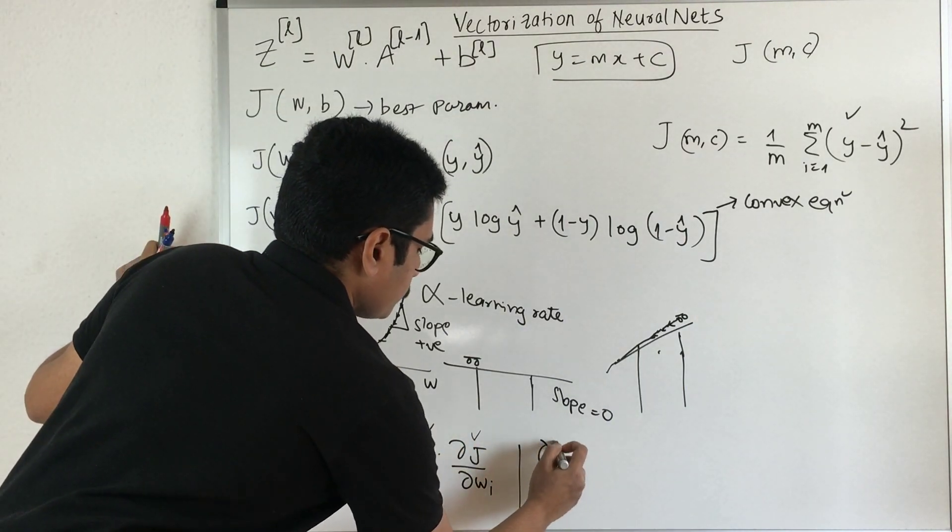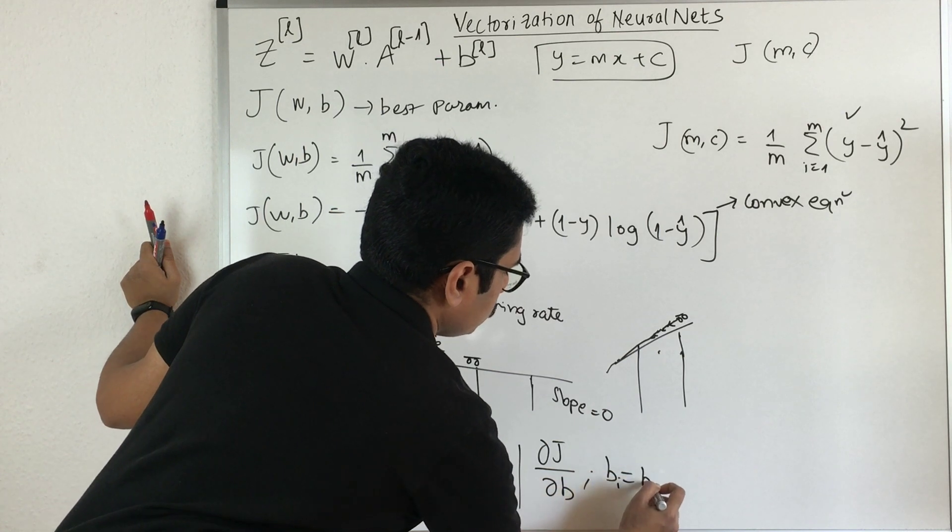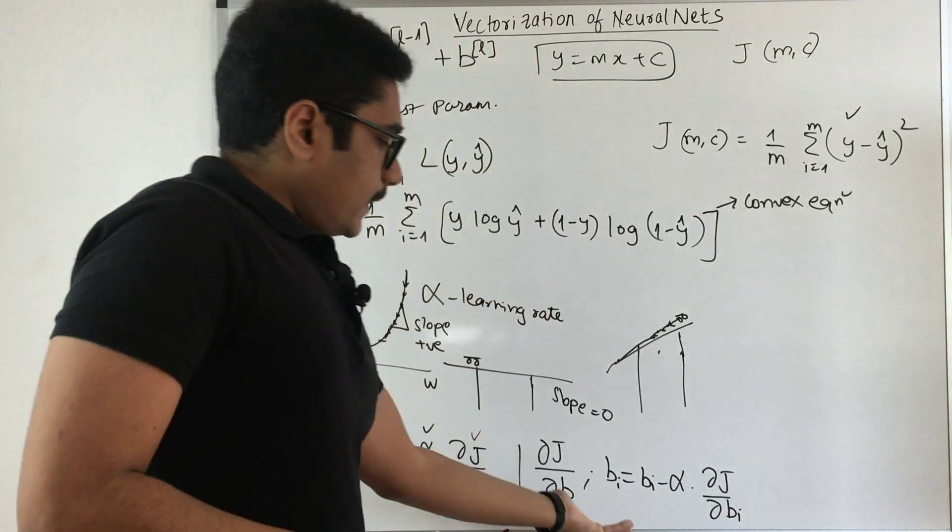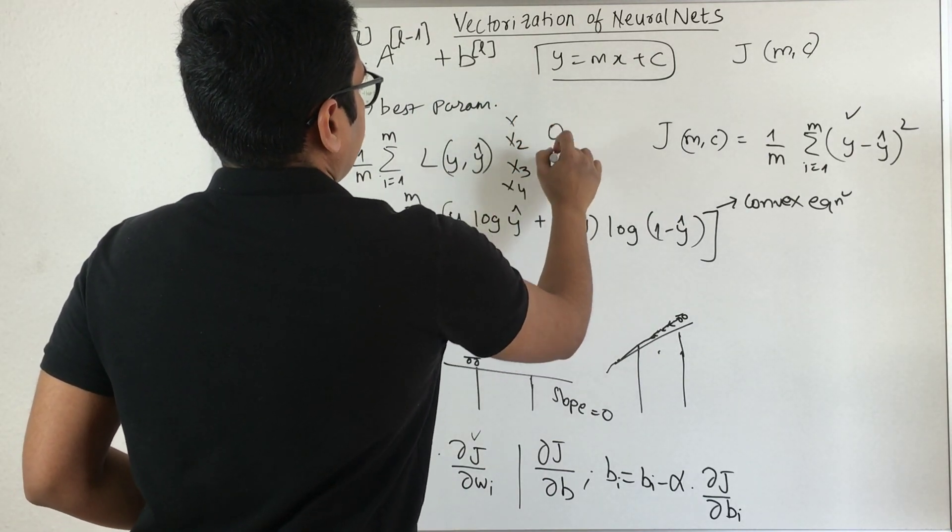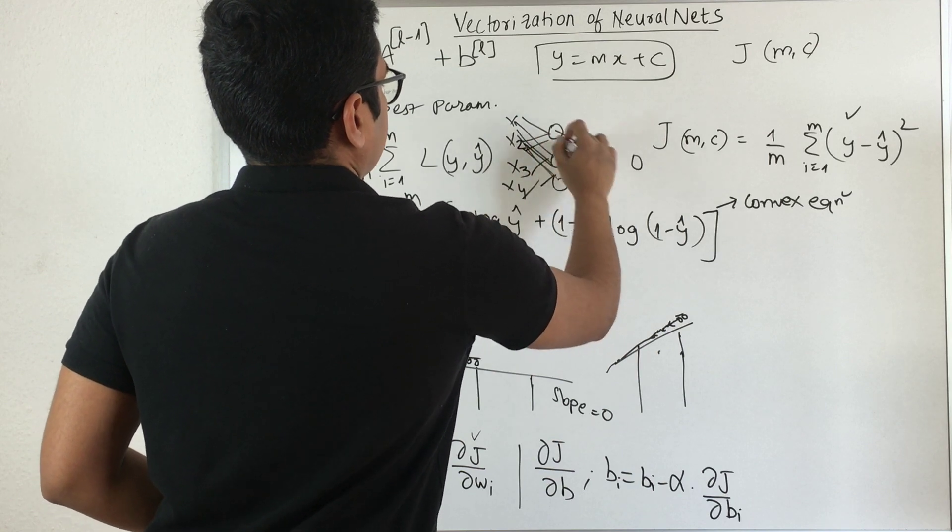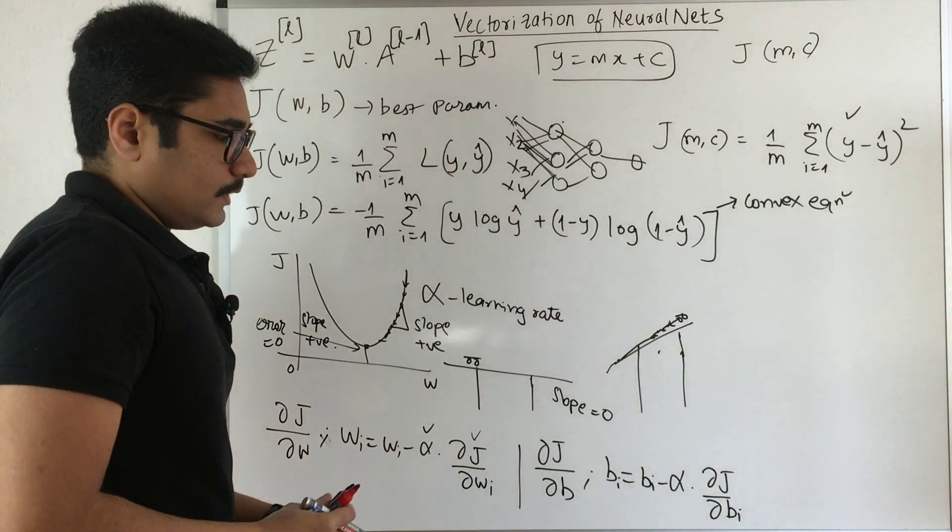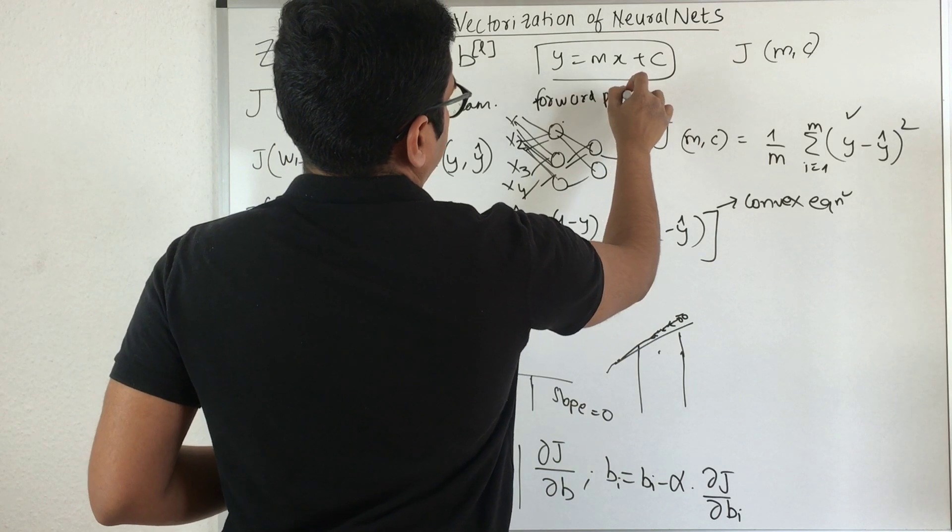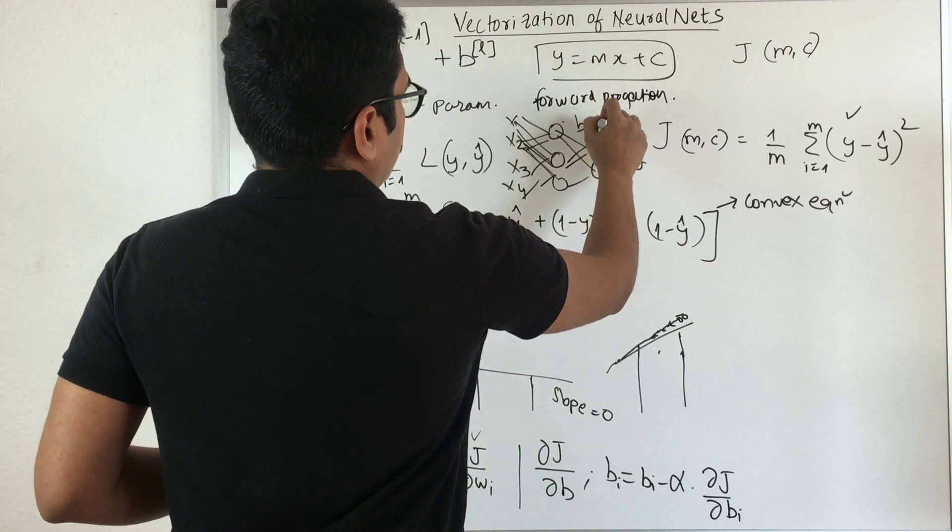Similar is the case with your bias. You have bi equals bi minus alpha times ∂J/∂bi. For each of the biases and weights in your neural network (x1, x2, x3, x4 in the previous setup), you need to adjust this. This updation is done with gradient descent. When we move forward we have forward propagation, and for coming back to each layer, which is a more difficult activity, we do back propagation.